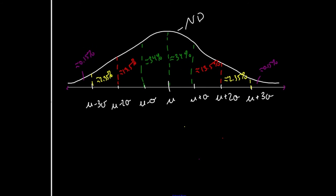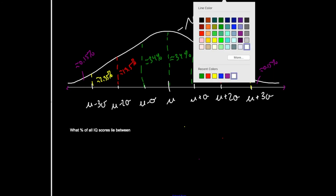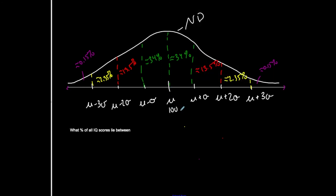Now I can actually ask specific detailed questions. If you were to add up all of these percentages, it should add up to 100% of the data values. So now I'm going to be detailed. What percent of all IQ scores lie between? Since we're doing IQ scores, let's just put those values on here again. So the center was 100, 115, 130, 145, 85, 70, and 55.